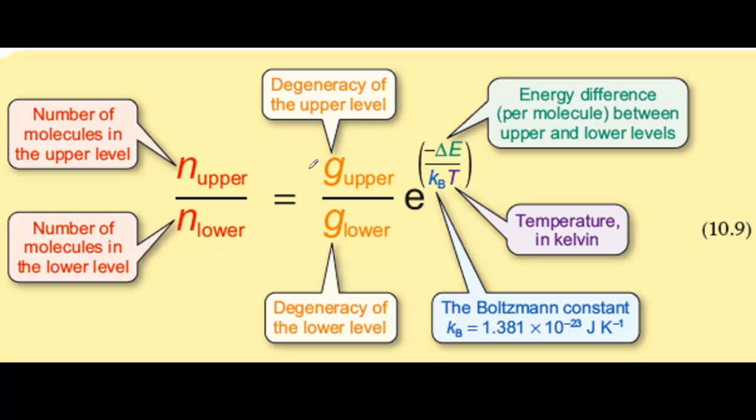This is important because, for example, in absorption spectroscopy, if there are a lot of molecules in the lower level, there will be plenty available to be promoted to the upper level, which will make the corresponding line in the absorption spectrum more intense.